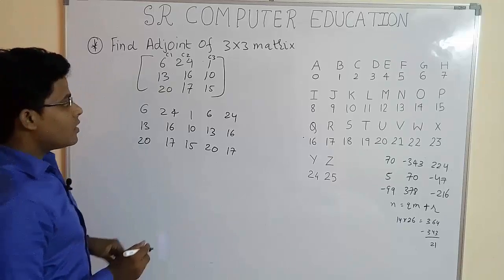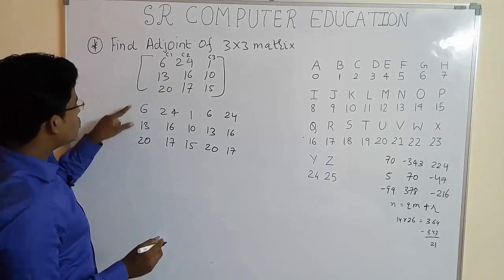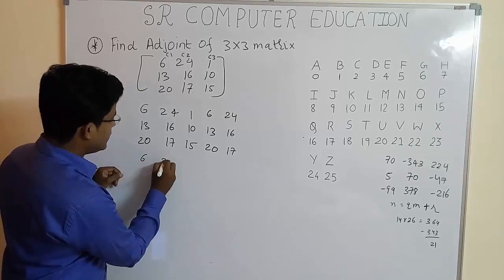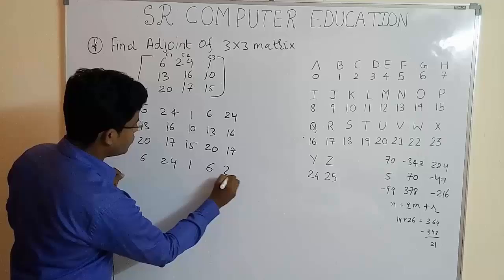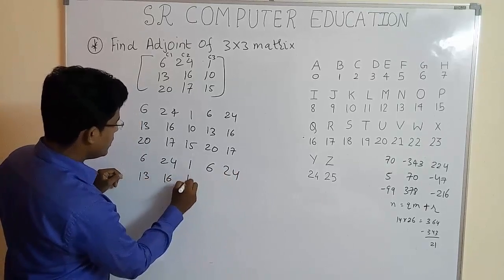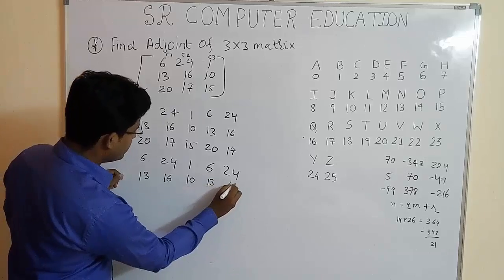In the next step, what you have to do? You have to repeat first and second row. So, 6, 24, 1, 6, 24, 13, 16, 10, 13 and 16.